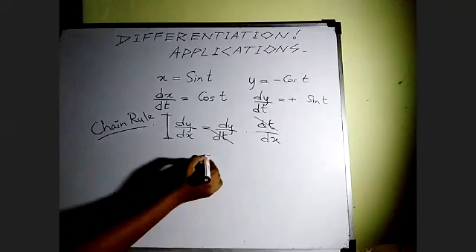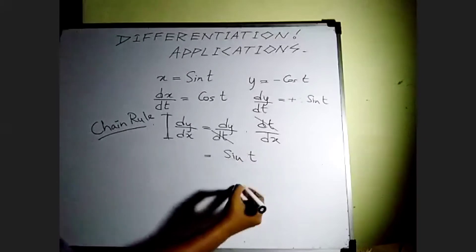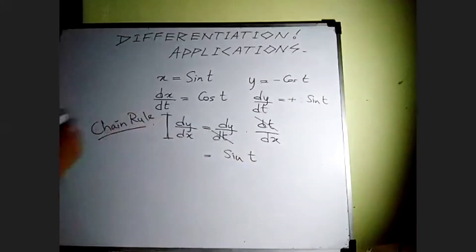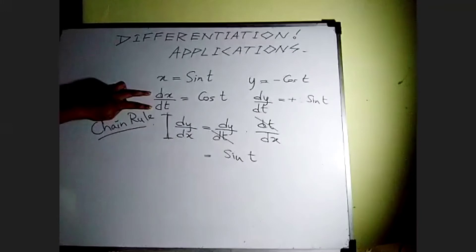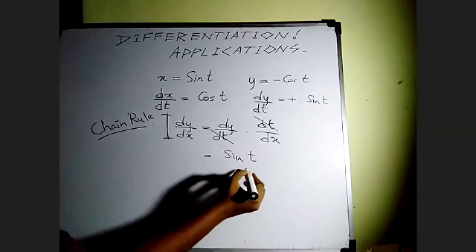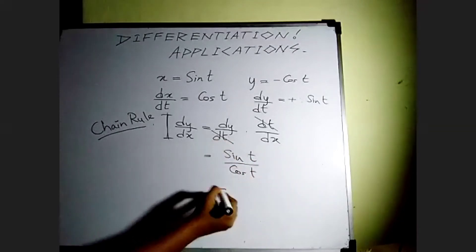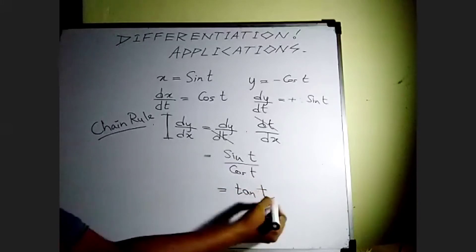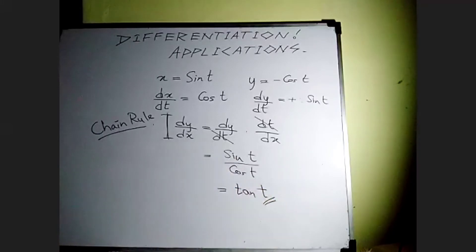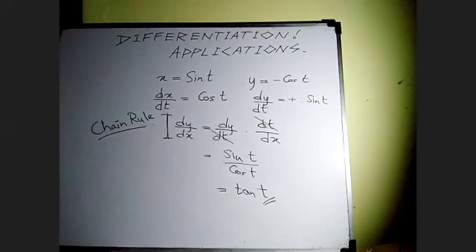Applying the chain rule: dy/dx = dy/dt multiplied by dt/dx. We substitute dy/dt = plus sin t, and dt/dx is the reciprocal of dx/dt. So dx/dt = cos t becomes dt/dx = 1 over cos t. Therefore sin t over cos t equals tan t. So tan t is the derivative of this function given by the two parametric equations.